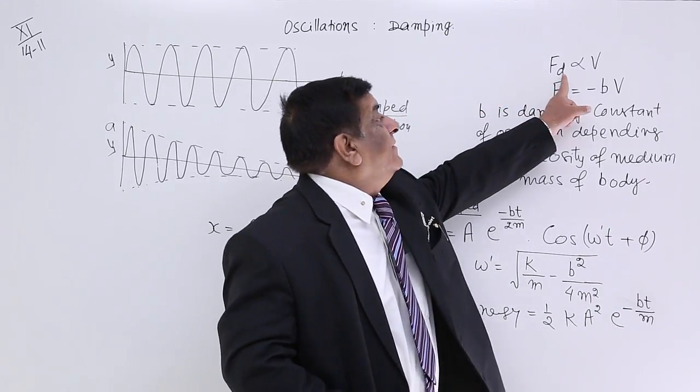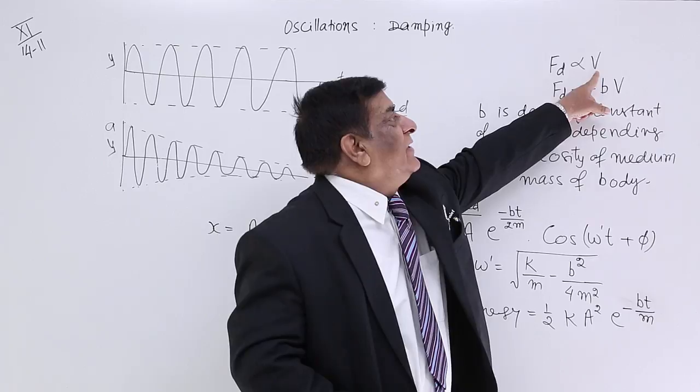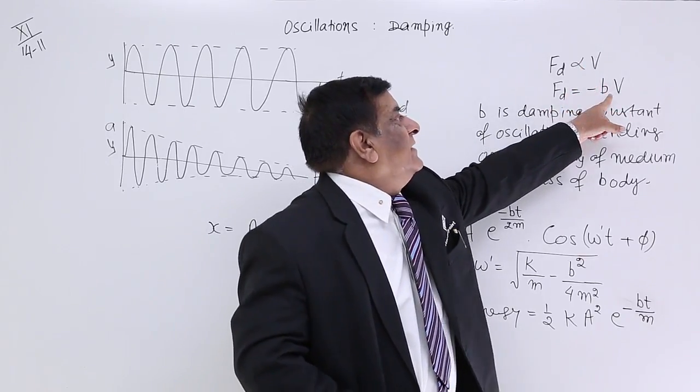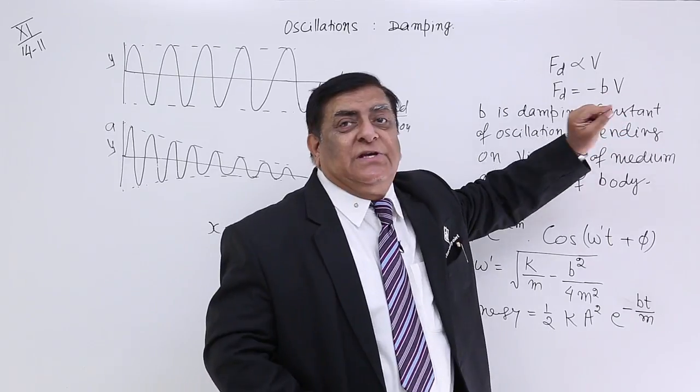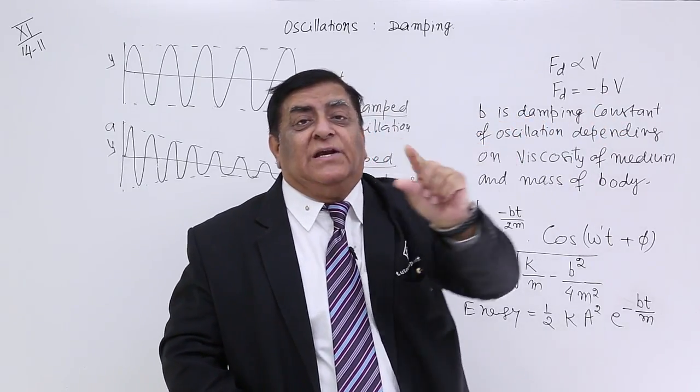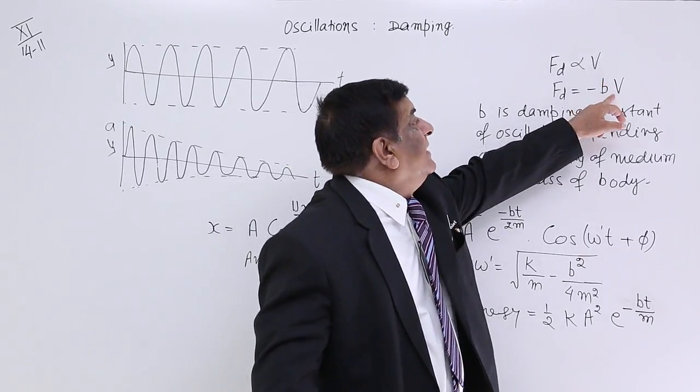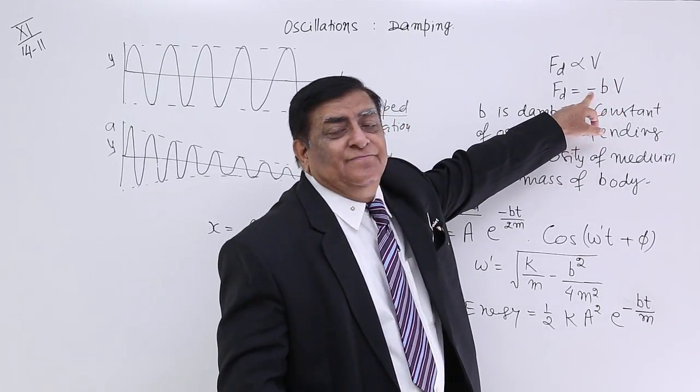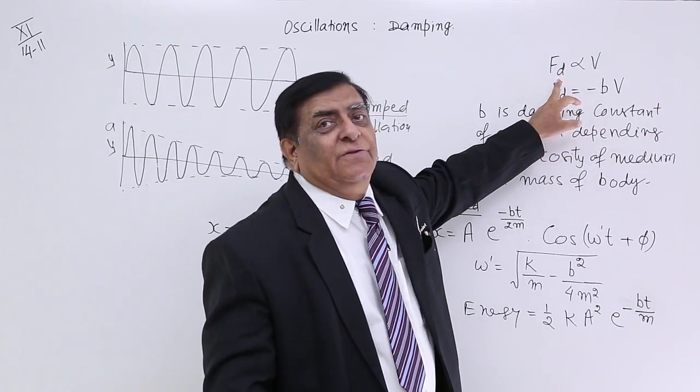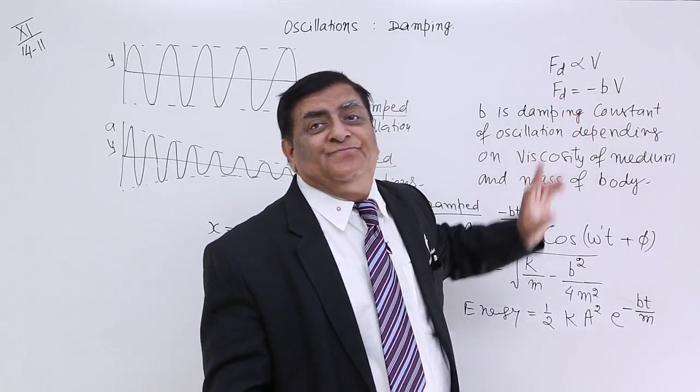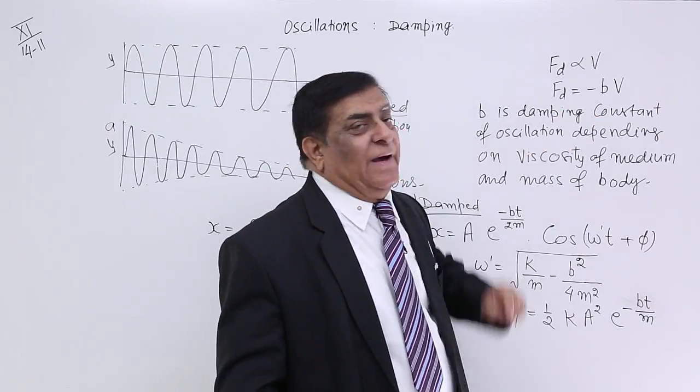And we have seen Stokes' law: F is equal to 6 pi eta r V. V is velocity. So, that force of damping is due to velocity. More velocity, more damping. So, force of damping is proportionate to velocity and if we equate it, we have to put a constant here.